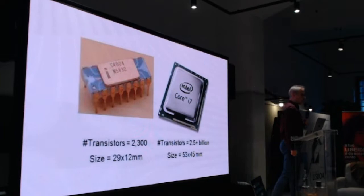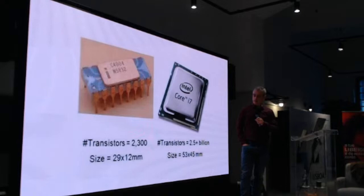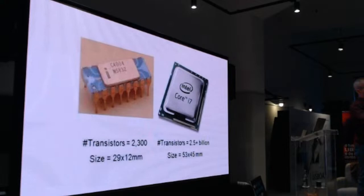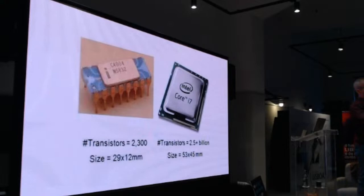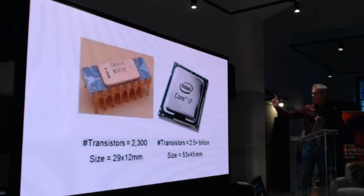Do you know what the Intel 4004 is? It was the first microprocessor created by Intel — the first integrated microprocessor used in a computer. At that time it had only 2,300 transistors, each around 100 microns in dimension — roughly the diameter of a human hair. This was in 1974 or 1975. At the time they were already considered very small.